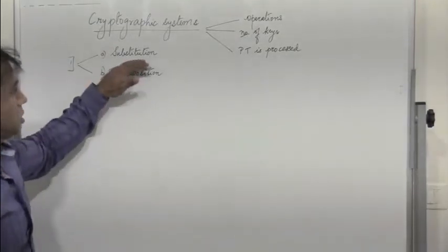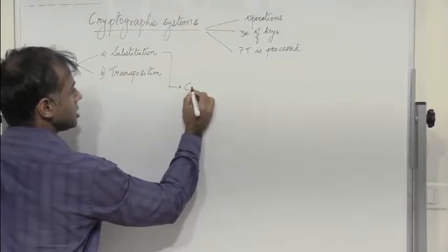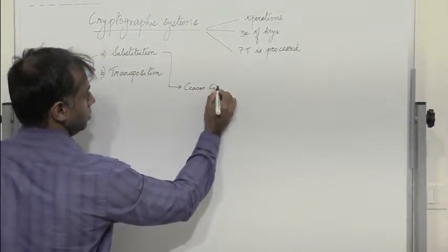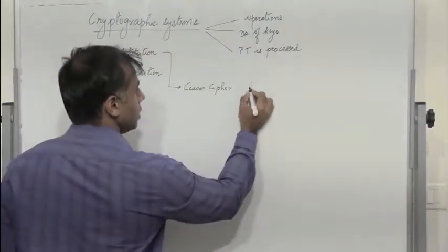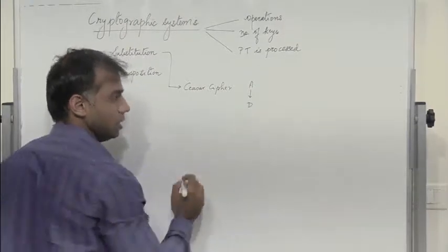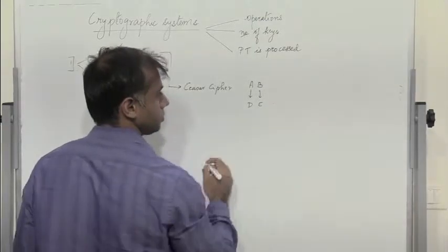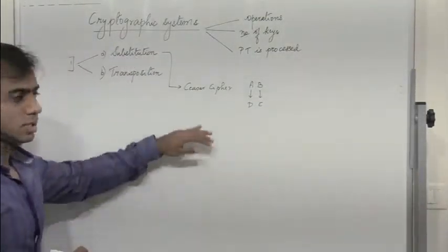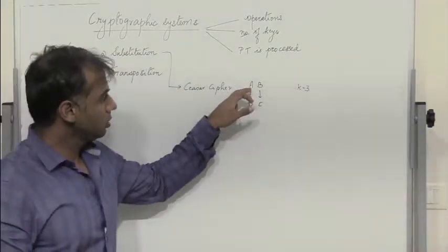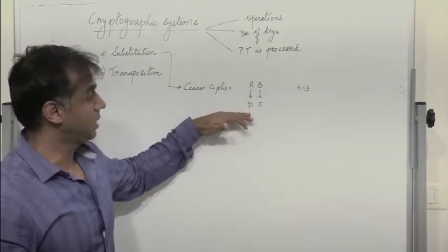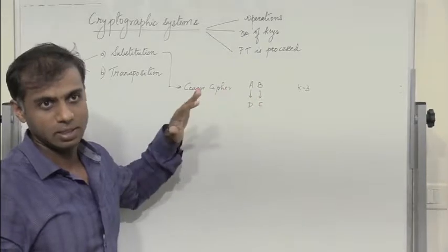What is substitution? Let's take a few examples. In Caesar's Cipher, a given alphabet A is replaced by D, another alphabet B is replaced by E, and so on. This is Caesar's Cipher where the key K equals 3. Here the alphabet A is substituted with another alphabet D, and the alphabet B is substituted with another alphabet E.